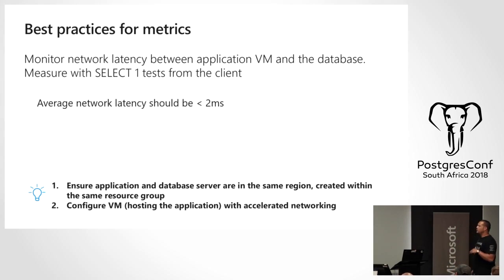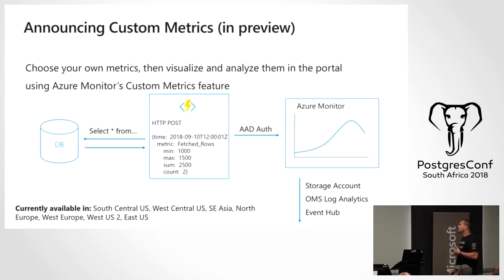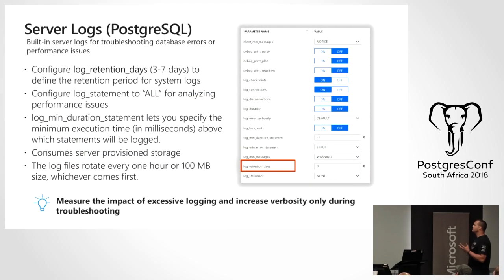For network latency, we recommend running a SELECT 1 from an external VM or your site and checking for ~2 millisecond latency. That may not be achievable in South Africa yet, but when the local data center arrives — especially with MPLS or Express Route direct into the Azure backbone — it definitely will be. You can also pull custom metrics via REST APIs and push them to Event Hubs, OMS Log Analytics, or a storage account for performance analytics or automation.